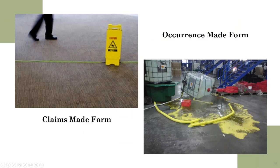There are two ways of writing commercial general liability: occurrence form and claims-made coverage. Additional resources including a CGL cheat sheet and a recorded webinar explaining how each works are available on the website for registered users.